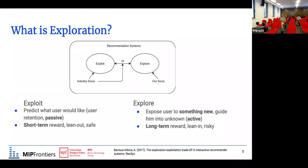Exploitation is when recommendation systems try to recommend tracks that have a high probability of the user liking them, based on user preferences. It is a very safe bet and contributes a lot of user attention because they keep listening to the recommended music, but it is also quite passive from the user perspective and contributes a lot to short-term reward.